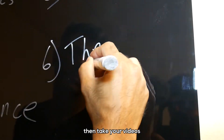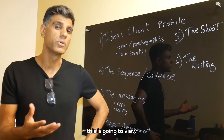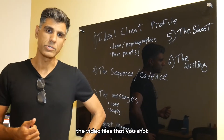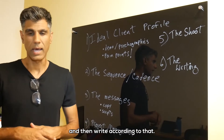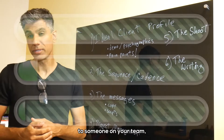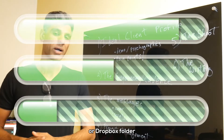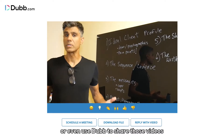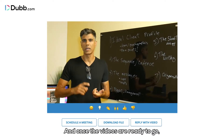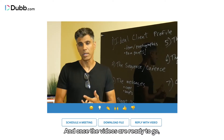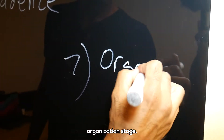Once you've shot your videos, you can then take them to the writing stage. You can view the video files you shot and then write according to that. If you're going to delegate this to someone on your team, send them a Google Drive or a Dropbox folder, or even use Dub to share those videos.